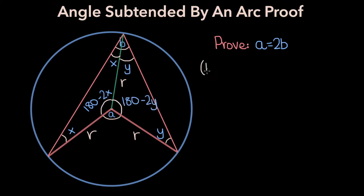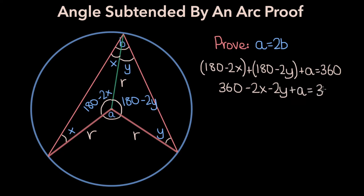Now we can write the equation 180 minus 2X plus 180 minus 2Y plus A equals 360, because the angles around a point must always sum up to 360 degrees. Now to simplify this equation, 180 plus 180 is 360, so 360 minus 2X minus 2Y equals 360. The 360's will cancel.